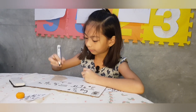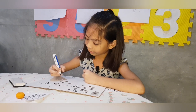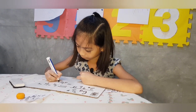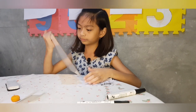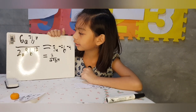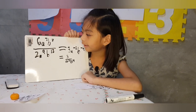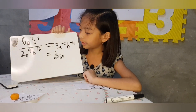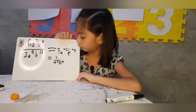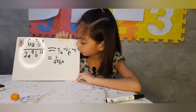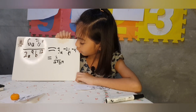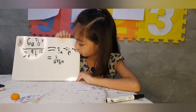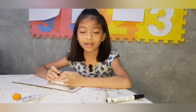Now put the equal sign again. So 6a⁷b⁸ divided by 2a⁹b¹² equals 3a to the negative 2 b to the negative 4, equals 3 over a squared b to the 4th power. Bye everyone.